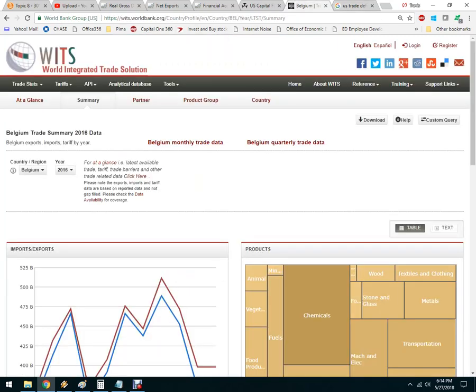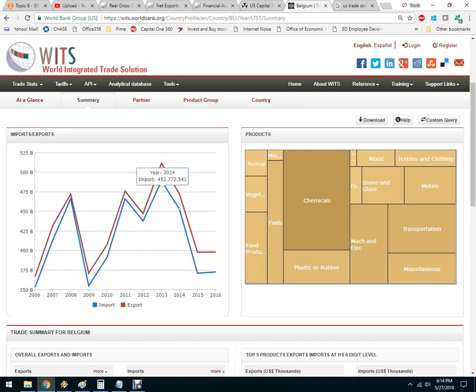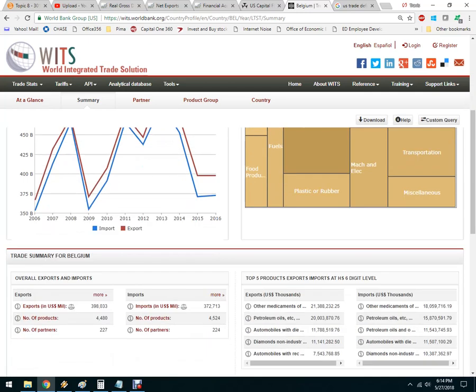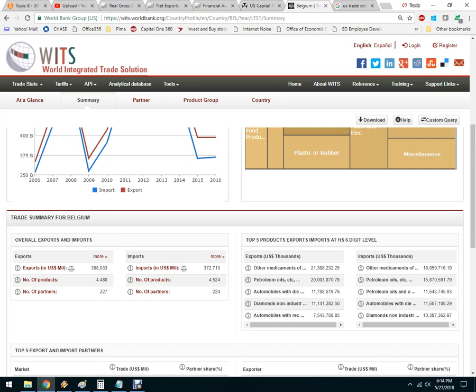For example, here is the WITS, this is the World Bank's trade database. So it's got all kinds of good information. I picked Belgium. It tells you their imports and their exports. You can see they kind of go together. These are the products that they import and export. This is the amount of money that's going back and forth across their borders. You can actually use this if you had a product that you want to sell to a developed country like Belgium. You can come in here and see if they're already importing it, and if not, that's an opportunity for you.